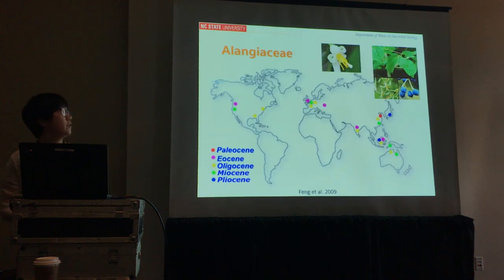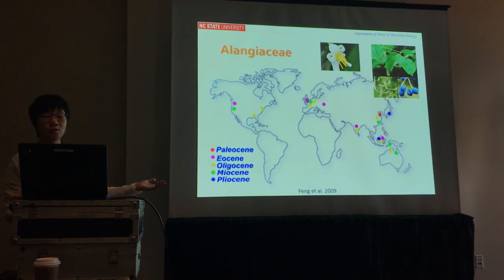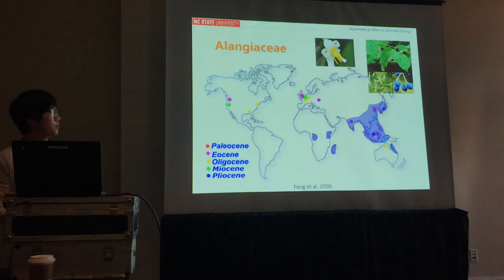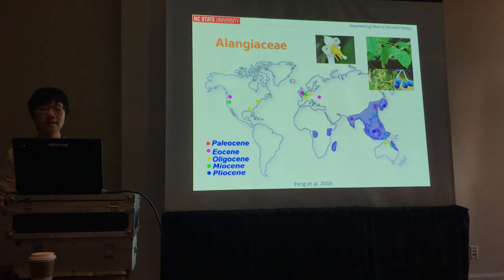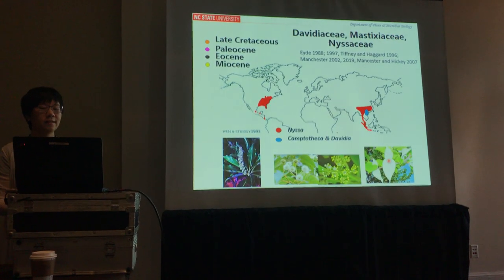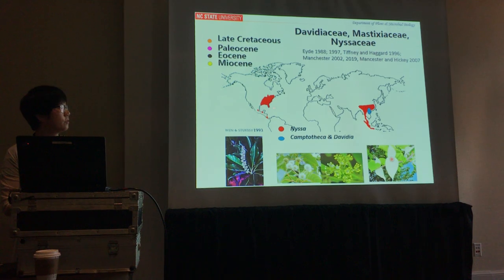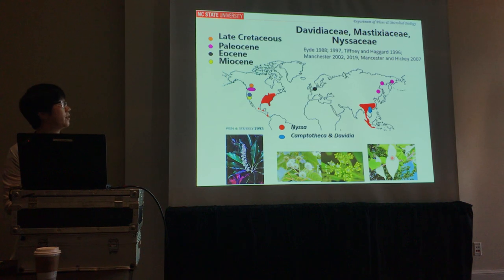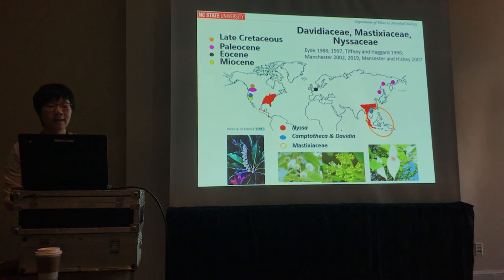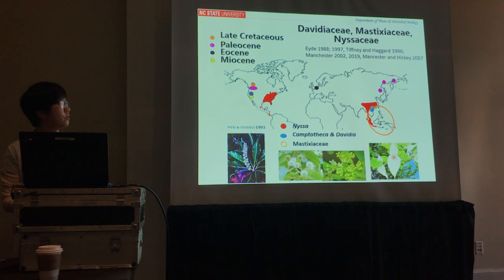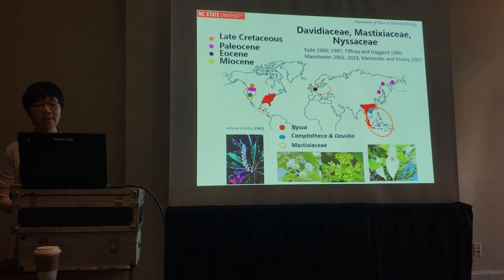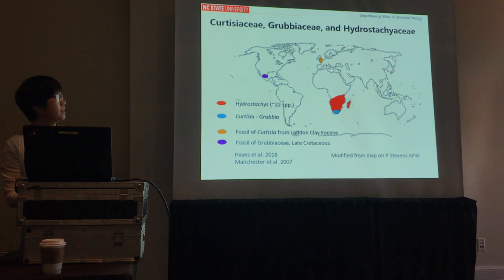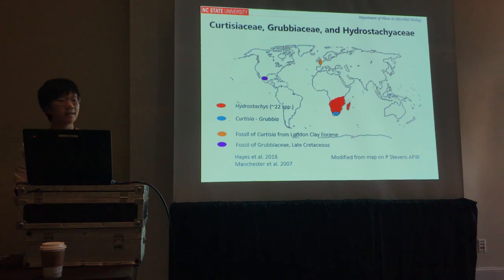To give a few examples: Alangium shows fossil distribution throughout the Tertiary, with current distribution only in the Old World tropics. Nyssoids have current distribution in Eastern Asia and Eastern North America, but fossils occur in Asia, Europe, and Western North America, as old as the late Cretaceous. Mastixia has current distribution in Southeast Asia, with fossils in Europe and North America. Southern African lineages also have fossils in Europe and Mexico, dated to the late Cretaceous.